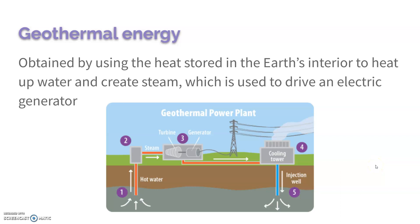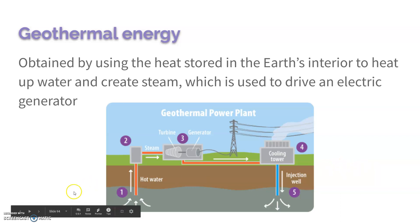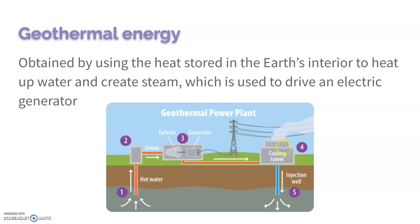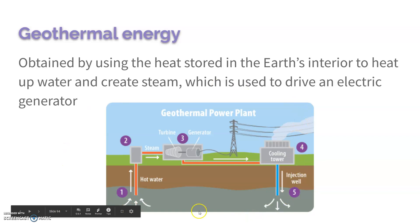Geothermal energy comes from the heat stored in Earth's interior. We use that heat to heat up water and create steam, and then that drives the generator. We can actually put that water back, so we have this constant flow of water because it heats back up and then we use it to create steam, and so on.